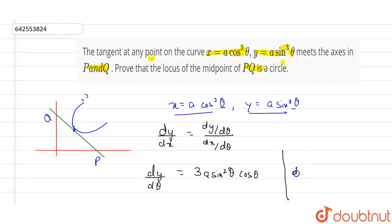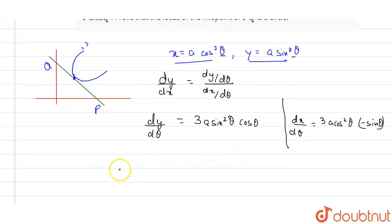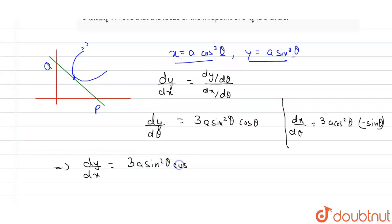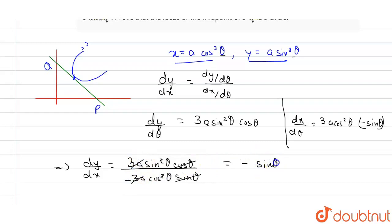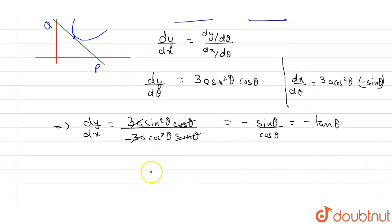Similarly, dx/dθ: differentiating a cos³θ gives 3a cos²θ · (−sin θ). So putting the values, dy/dx = (3a sin²θ cos θ) / (−3a cos²θ sin θ). The 3a and sin θ and cos θ cancel, leaving us with −sin θ / cos θ, which equals −tan θ. So the slope of the tangent is −tan θ.